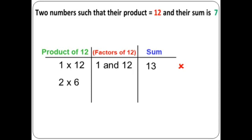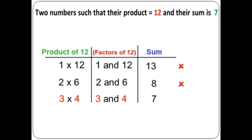Let's try times table 3. Which number times 3 gives me 12? If you can't remember, 12 divided by 3 gives you 4. So three times four is equal to 12 — the factors are 3 and 4. Their sum is equal to 7. That's what we want! So the two numbers are 3 and 4: their product is 12 and their sum is 7.